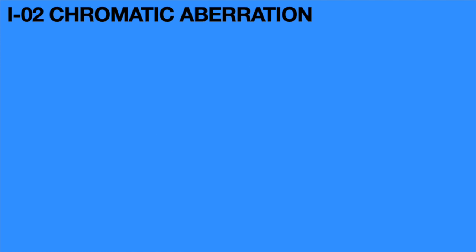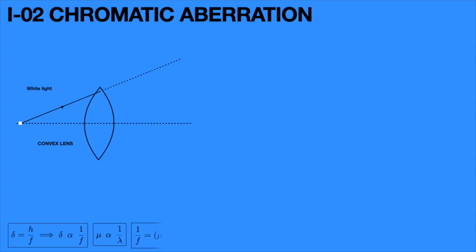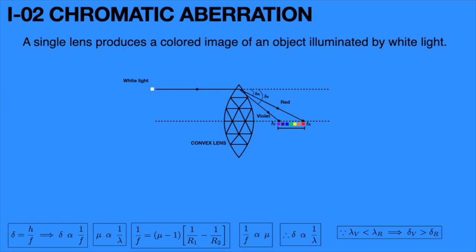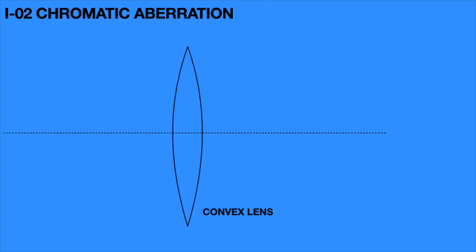Similarly, chromatic aberration occurs for a white light point object situated on the principal axis as well, as shown in animations for both convex and concave lenses. This means chromatic aberration occurs for any object situated at any point from the lens. Now consider a line object. Take a line object AB on the principal axis with a convex lens. The white light ray from point A passes through the center of the lens along the principal axis.